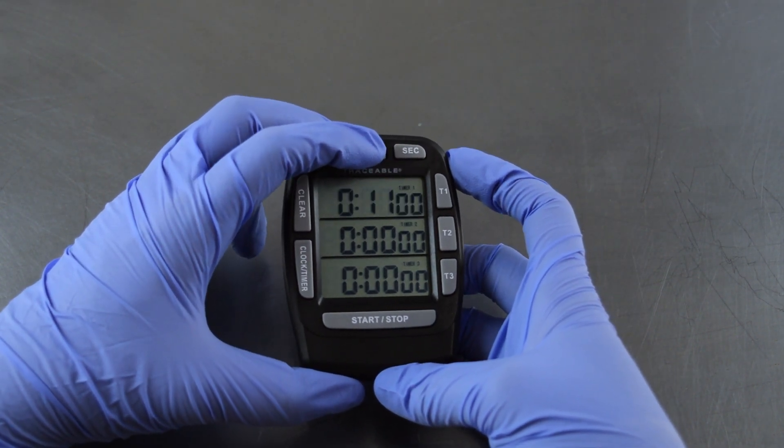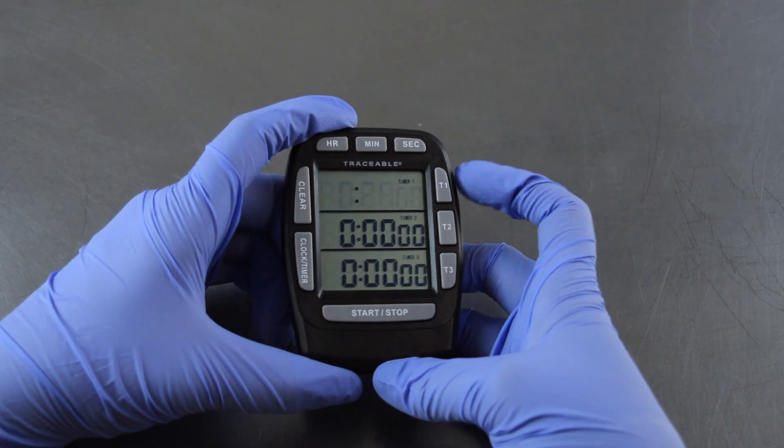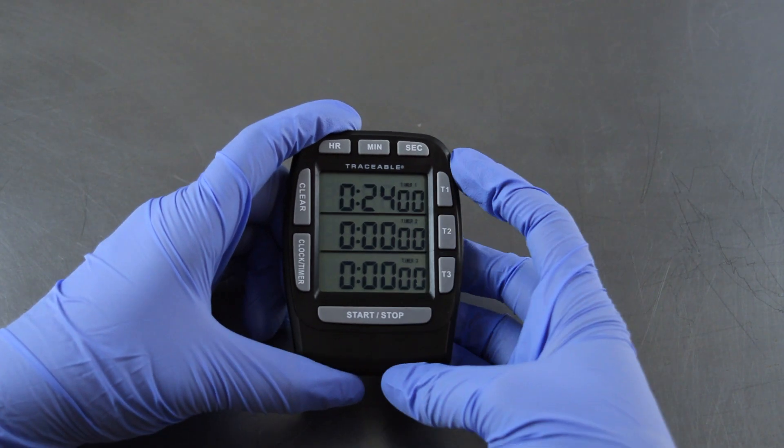Set your timer by pressing the minute button on the top of the timer. Once you see the appropriate time on the screen, press T1 again to lock. The numbers will stop blinking and your timer is set.